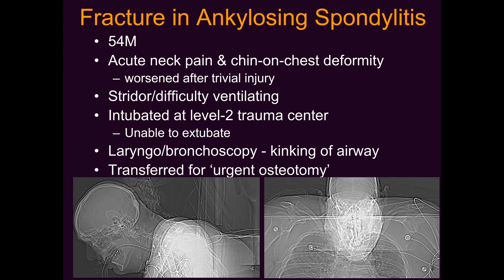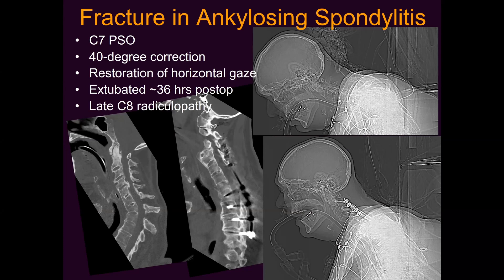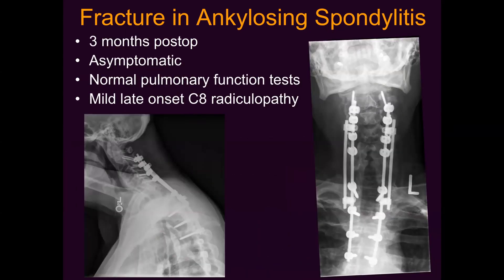This patient with ankylosing spondylitis had an acute worsening of his chin-on-chest deformity from relatively trivial trauma, causing respiratory dysfunction requiring intubation in the ICU. Bronchoscopy showed kinking of his airway, and he was transferred for an urgent osteotomy. He had significant deformity at C7, so a C7 pedicle subtraction osteotomy was performed — restoring horizontal gaze and allowing extubation within about a day and a half of surgery, after having been intubated for over a week elsewhere. His only complication was a late-onset mild C8 radiculopathy.